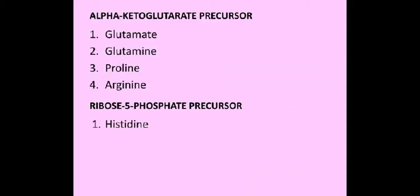Alpha-ketoglutarate is an important metabolic intermediate of the Krebs cycle, and 4 amino acids are derived from it: glutamate, glutamine, proline, and arginine. One amino acid is derived from ribose-5-phosphate, and that is histidine. Ribose-5-phosphate is a metabolic intermediate of the glycolytic pathway.